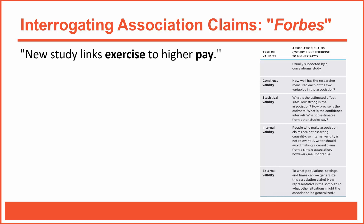Let's go ahead and look into this association claim more closely — in other words, let's interrogate this claim by assessing each of the key validities. I'd like to interrogate this particular claim two different ways. First, let's interrogate it using what I'm going to call the quick and easy method.